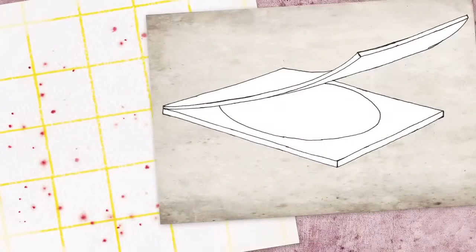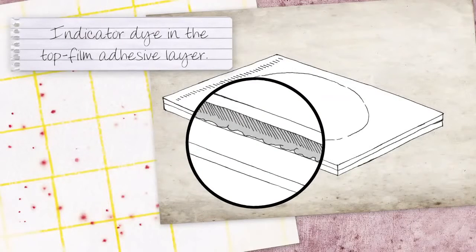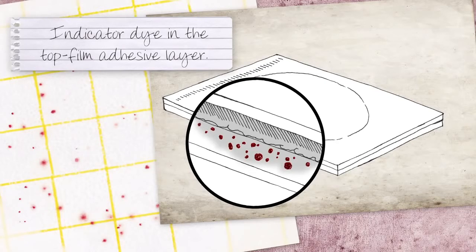With Petrifilm plates, the dye was ingeniously placed in the adhesive layer. This allowed the colonies to first grow strong before the dye diffused through the adhesive and gel layers to reach them.